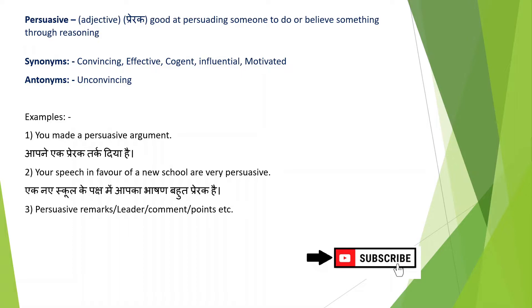Now I will move on to the next slide. What is persuasive? Persuasive is an adjective. It means good at persuading someone to do or believe something through reasoning. Synonyms are convincing, effective, cogent, influential, motivated. Antonym is unconvincing. Now with the help of examples, we will see how we can use this adjective.